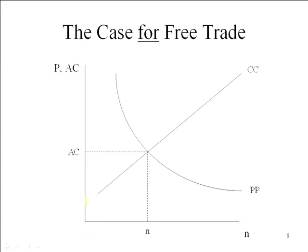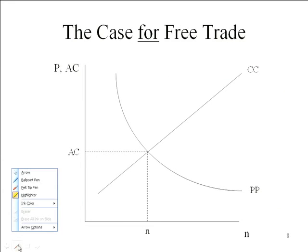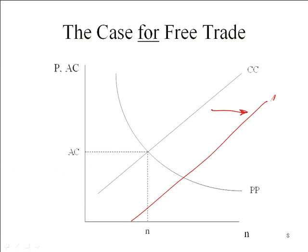Looking at a diagram: since we have the number of firms on the horizontal axis, this would be a monopolistic competition model — not external economies of scale, which would use a quantity axis. When we get rid of trade barriers and increase the size of the market, our cost curve shifts to the right. That means we get an increase in the number of firms — which also means an increase in the variety of products, since we have differentiated products in this industry — and we'll also see a lower price. So we've got more firms operating on a larger scale, taking advantage of economies of scale to drive down average cost. Competition also drives down the price, which benefits consumers, who are also benefited by having more variety.